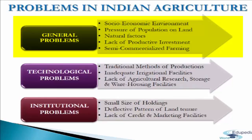The third problem is natural factors. Even after many years of independence, agriculture is said to be gambling with the monsoon. Rains are totally uncertain — there may be insufficient rainfall, or too much rain may cause heavy floods, both causing widespread damage and destruction. In addition, water logging, salinity, and land degradation further contribute, and the cumulative effect of all these factors leads to a downfall of agricultural productivity.